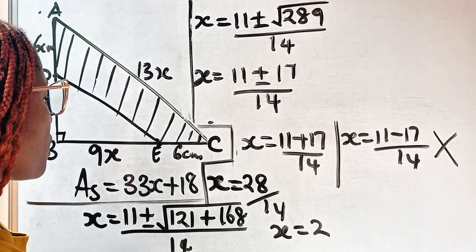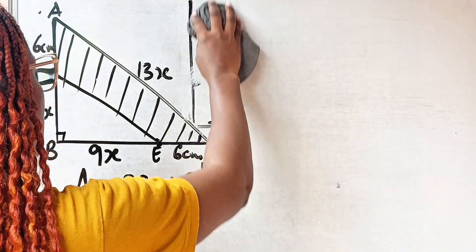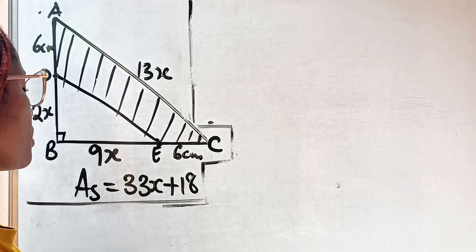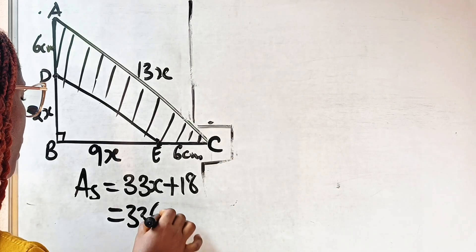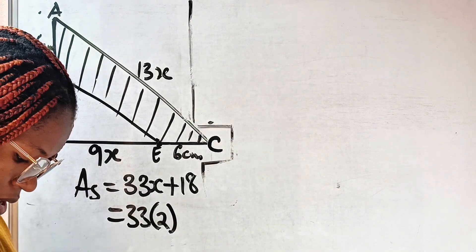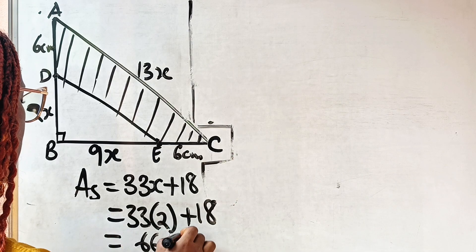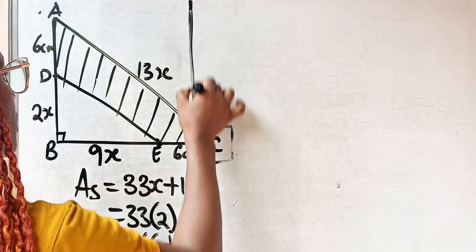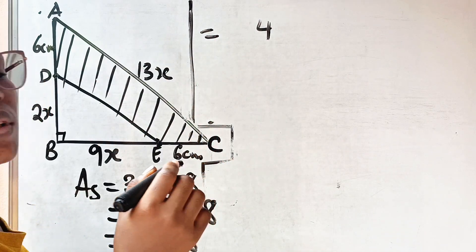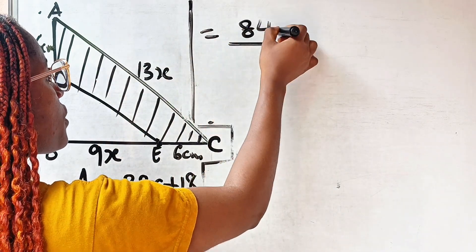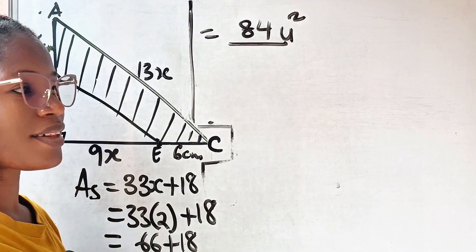Finally, an amazing question. Since x equals 2, we can now find the area of the shaded portion. Area of the shaded portion equals 33 multiplied by 2 plus 18, which is 66 plus 18, giving us 84 units squared. Thank you for watching and see you in my next video.